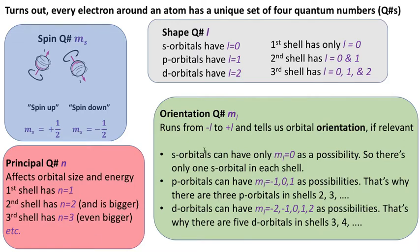So the last one is called the orientation quantum number. We're going to call it the orientation quantum number. It's called the letter is m subscript l. Here's the deal. M sub l runs. It can take on values starting at minus l and going all the way up to plus l. And it tells us the orientation of the orbital if that is relevant.